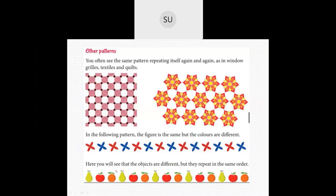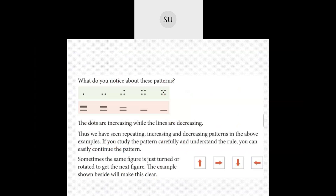In the next pattern, the objects are different but they repeat in the same order. First you have a pear, then an apple, then an orange. Then again you have a pear, apple, and orange. So it is repeating: one pear, one apple, one orange, again one pear, one apple, one orange.